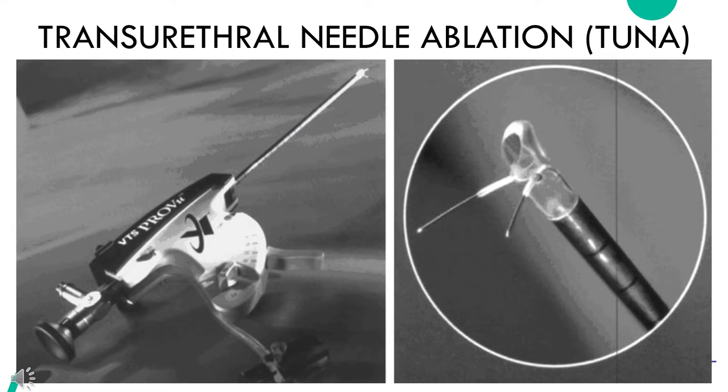The next procedure is transurethral needle ablation. A scope is passed into the urethra, allowing the surgeon to place needles into the prostate gland. Radiowaves are passed through the needles, heating and destroying excess prostate tissue that is blocking urine flow.